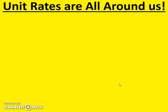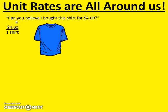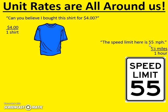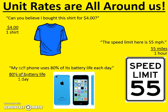Unit rates are all around us, so you have some experience with them. For example, when you've said a statement like 'Can you believe I bought this shirt for four dollars?' you are really comparing a unit rate — four dollars for one shirt — comparing any amount to one. Or maybe you've heard 'the speed limit here is 55 miles per hour,' which is how many miles compared to one hour. Or 'my cell phone uses eighty percent of its battery life each day' — comparing eighty percent to one day. Notice all unit rates have a one as the denominator of their ratio.